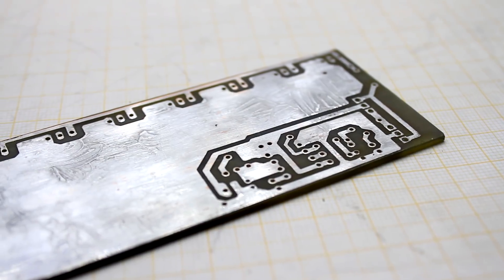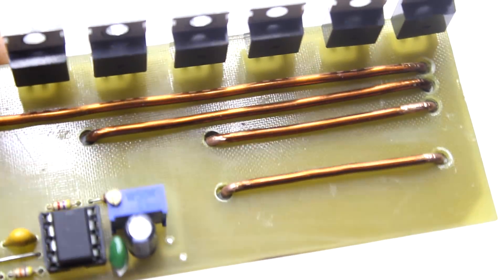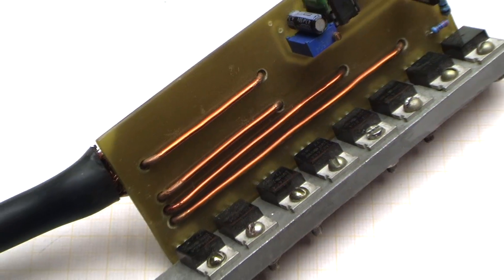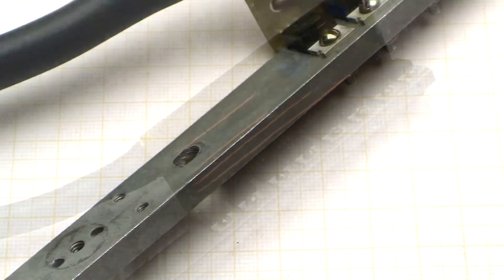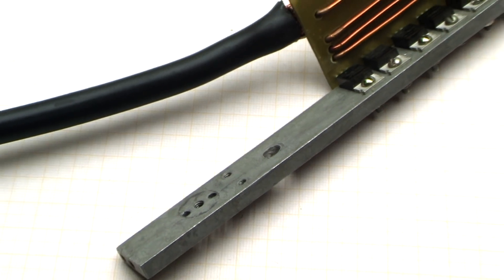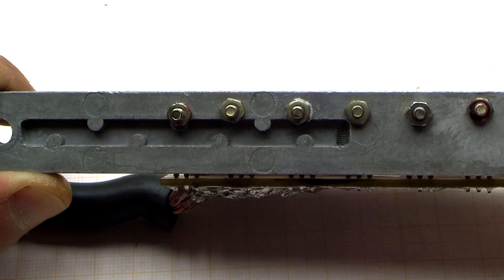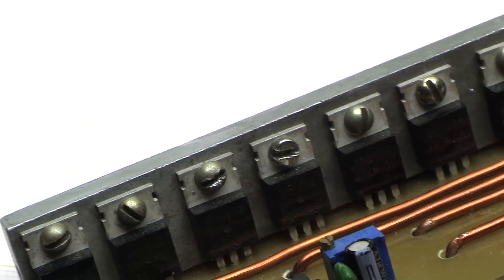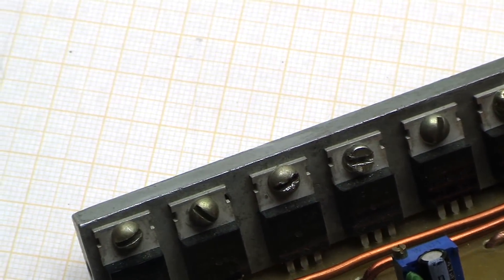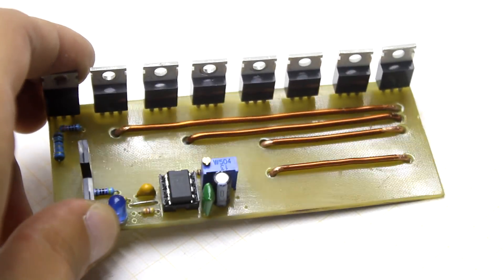Power tracks on the PCB are additionally reinforced with 3 mm copper wire. All field effect transistors are screwed to the duralumin bus, which is both a radiator and a power current carrying contact. Transistors are screwed to the bus without gaskets, even thermal paste doesn't need, as it will degrade electrical contact. The FETs will be in operation for a very short time and the heat is perfectly dissipated without thermal paste.